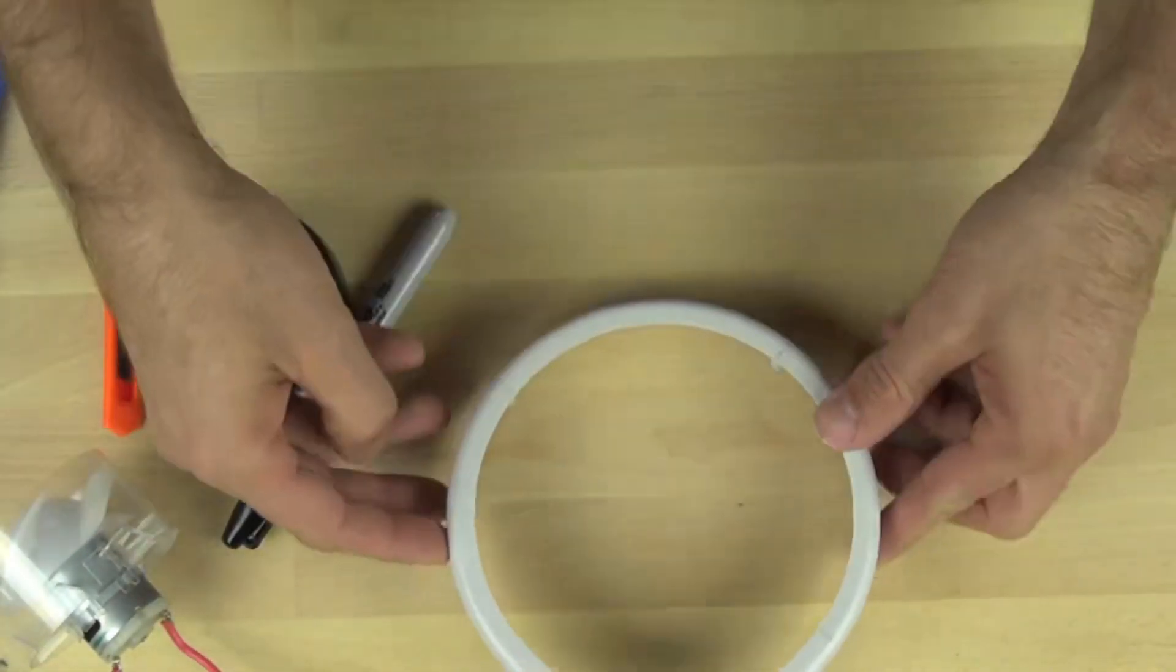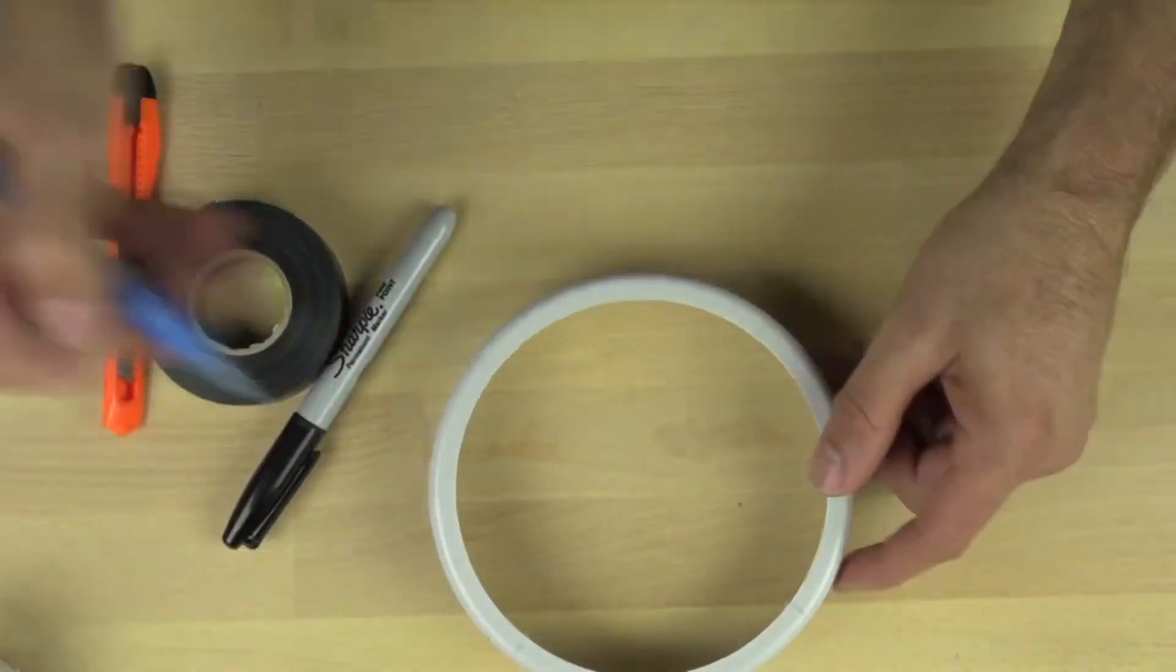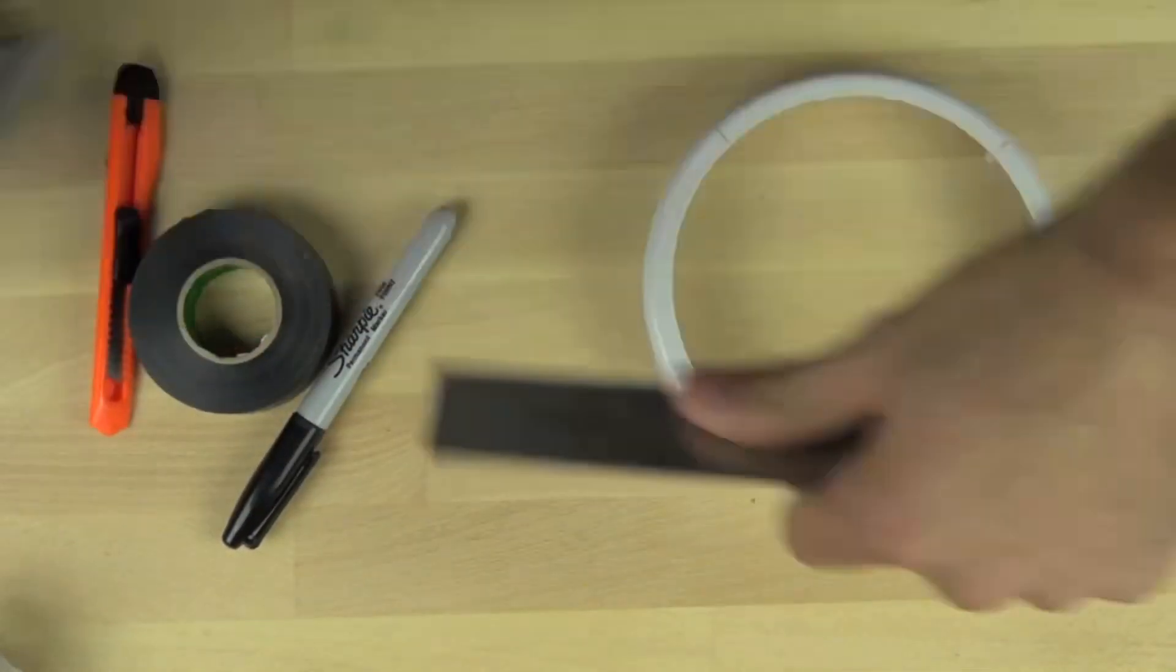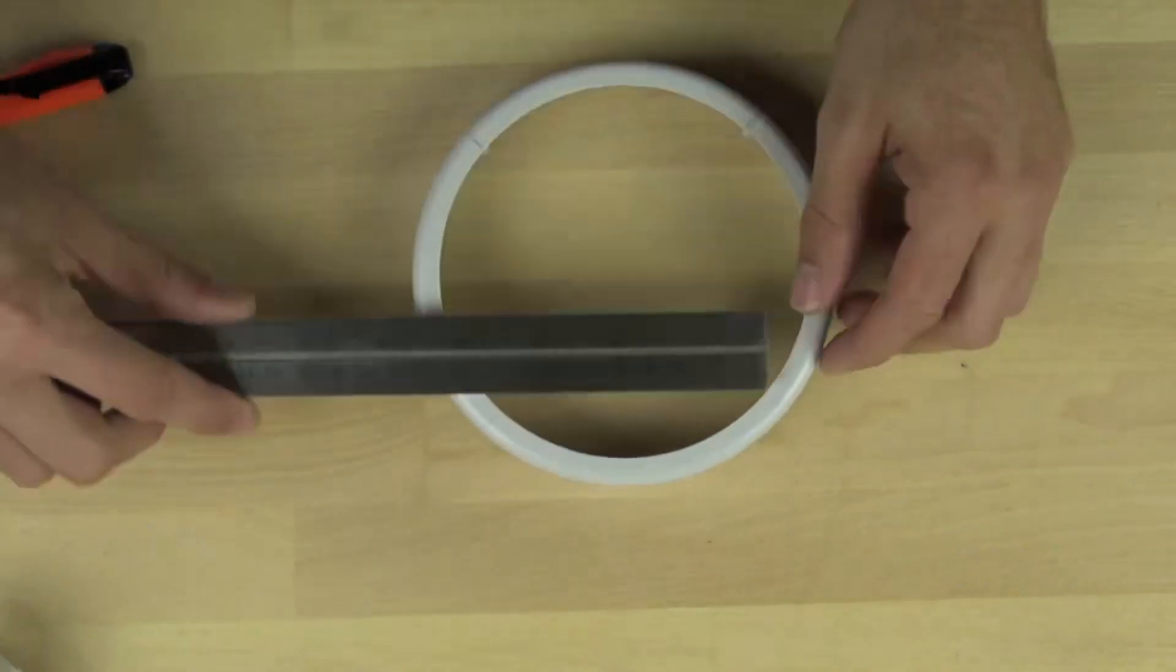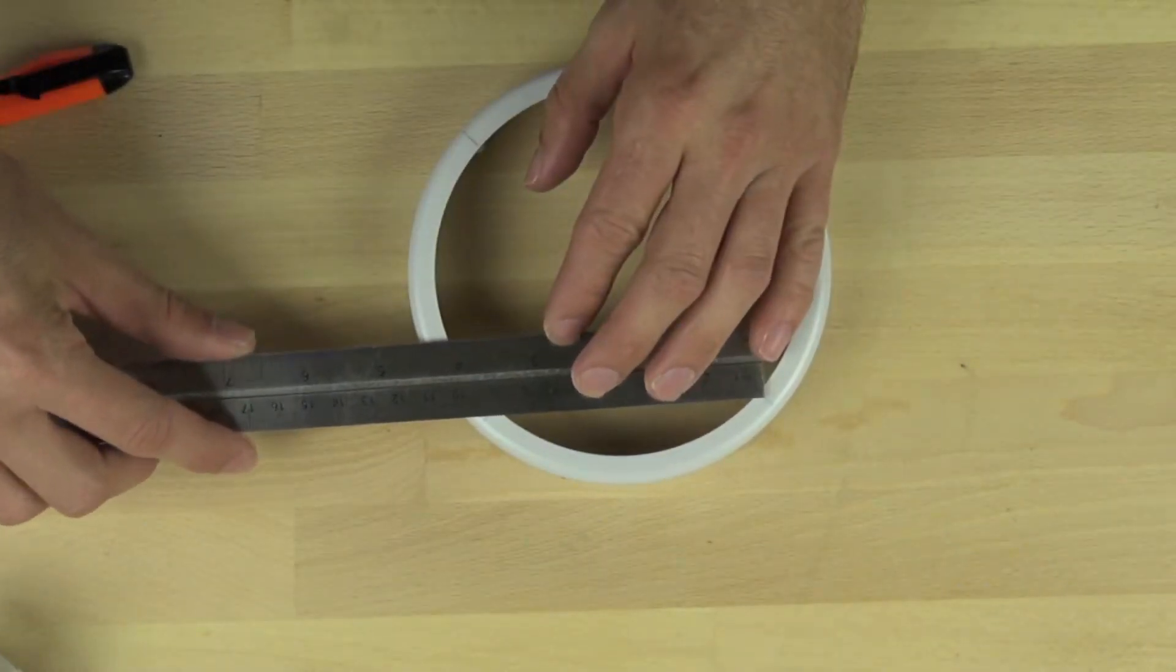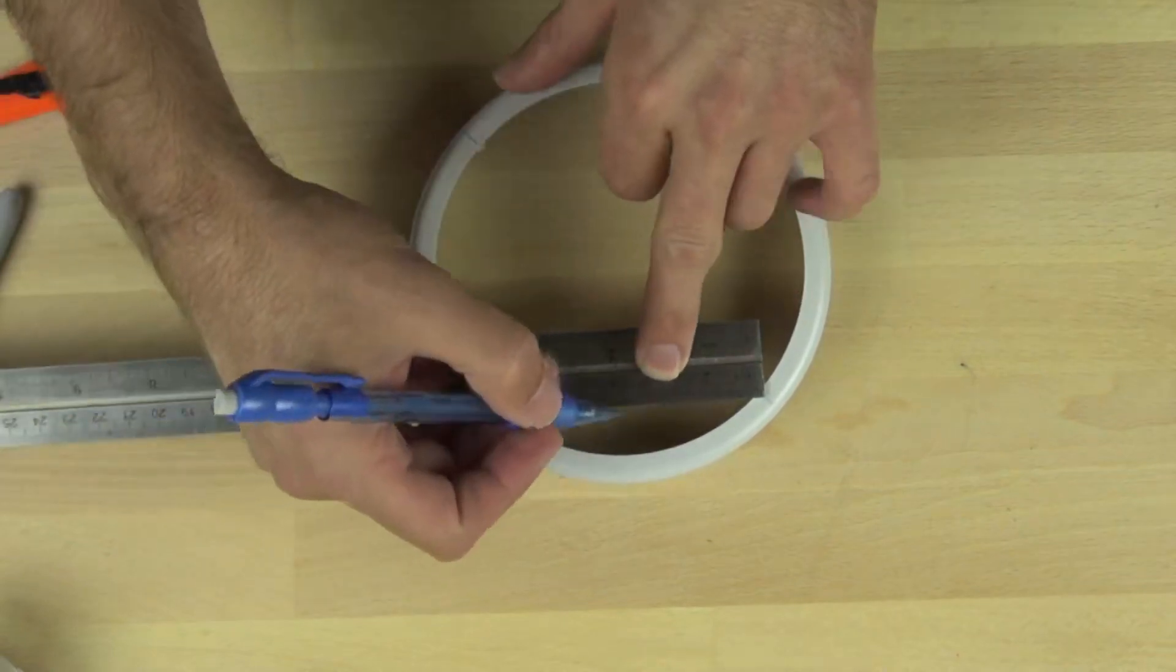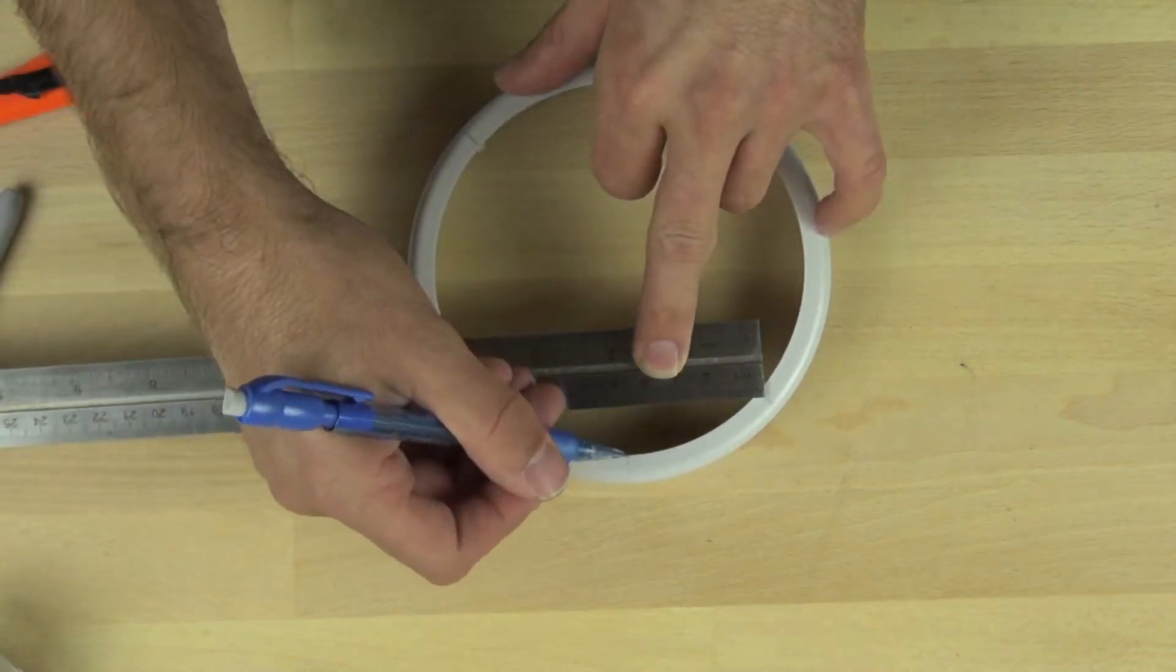We're marking the screw boss locations on our tap light, where the screws connected to the bottom of the tap light housing. We're going to measure between those. We've got about 9 centimeters between those, so 4.5 centimeters will be right in the center and we're going to mark that.